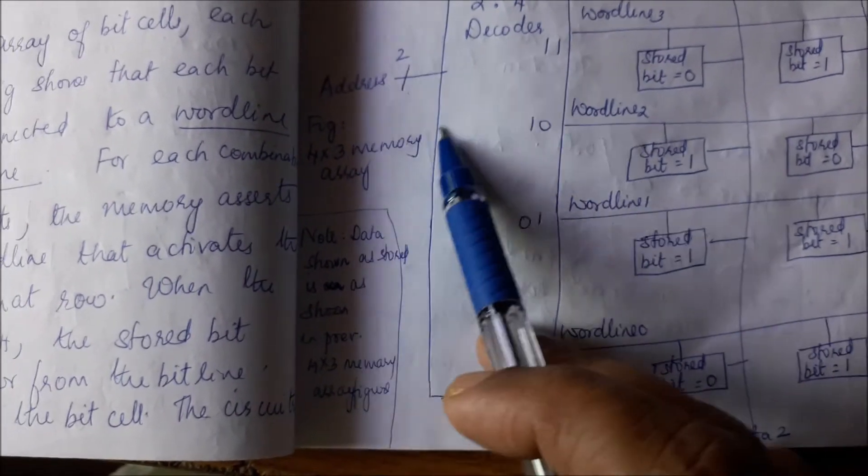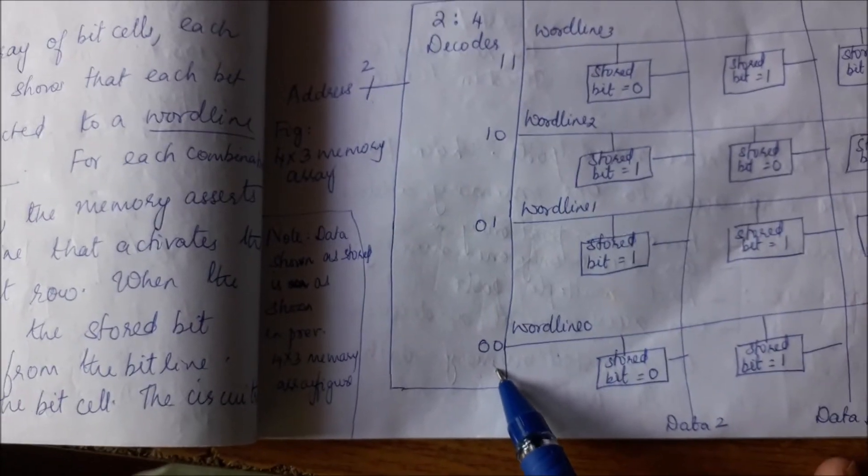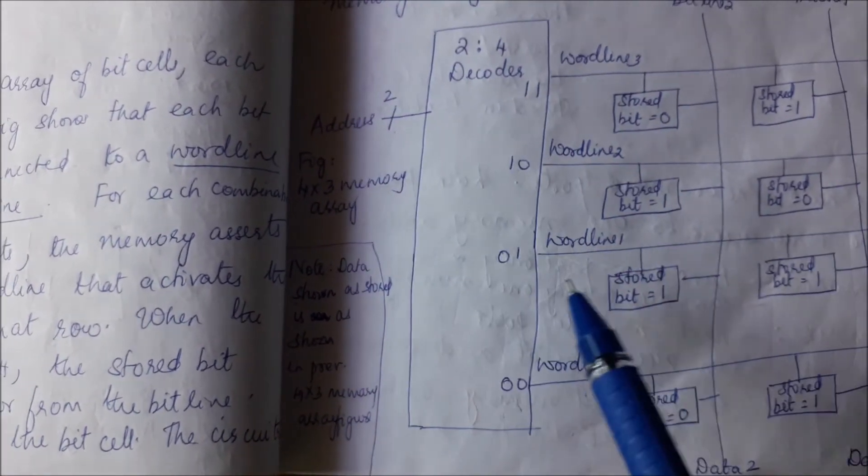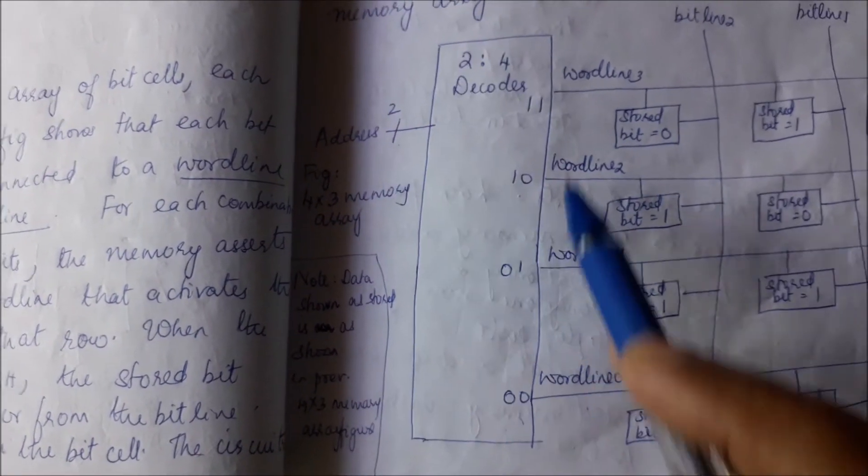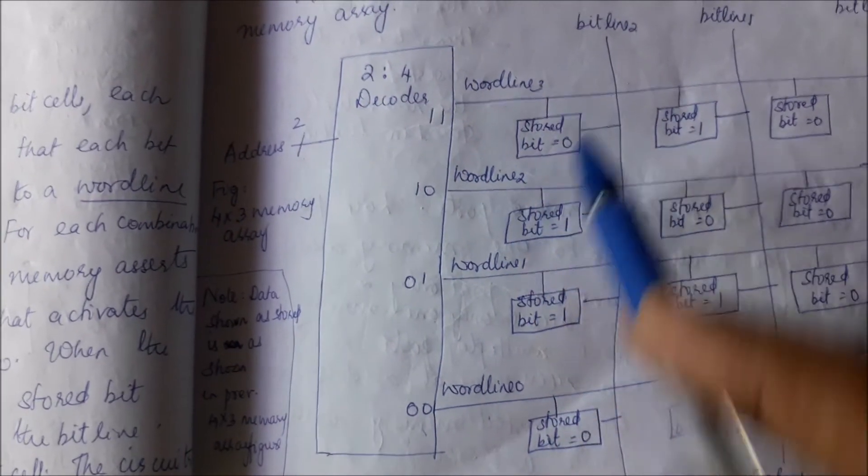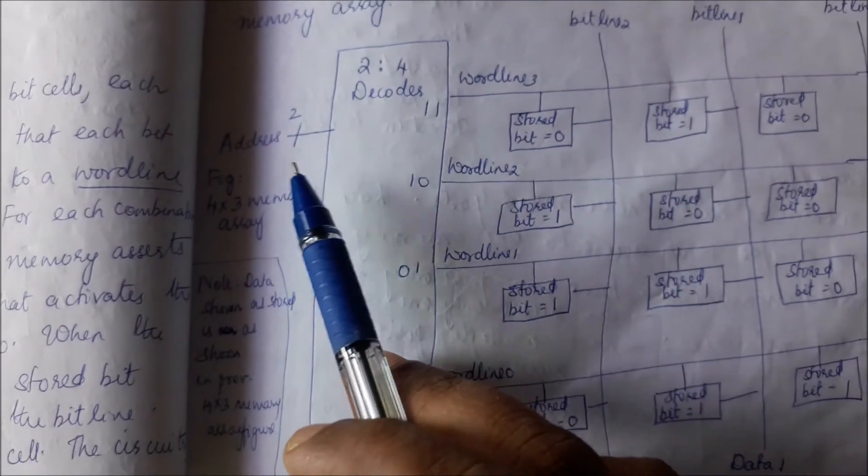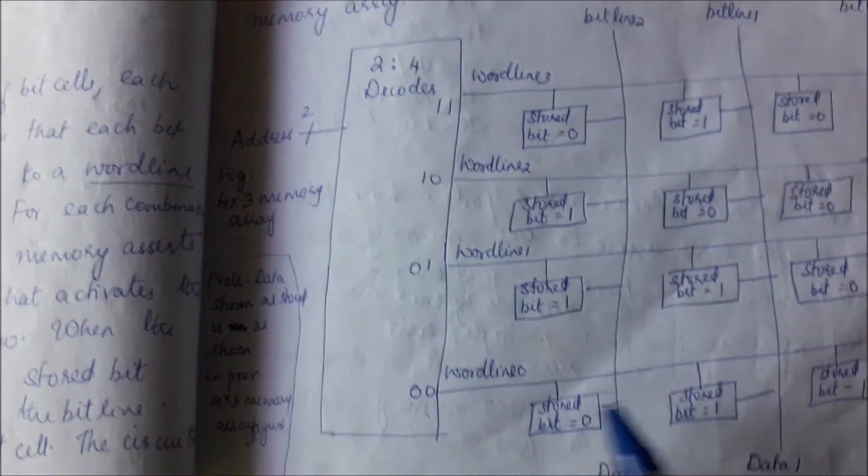When I give 0, 0 here, this line will become high. When I give 0, 1 here, this line will become high, and so on. One of these lines only is going to become high at a time. So let us say I have given an address of 0, 0. What will happen?